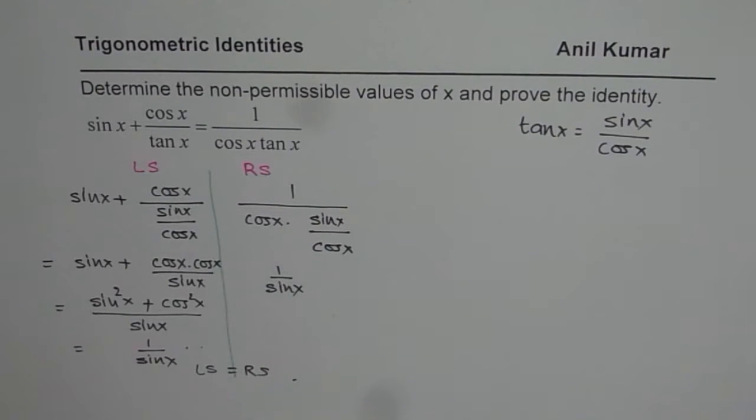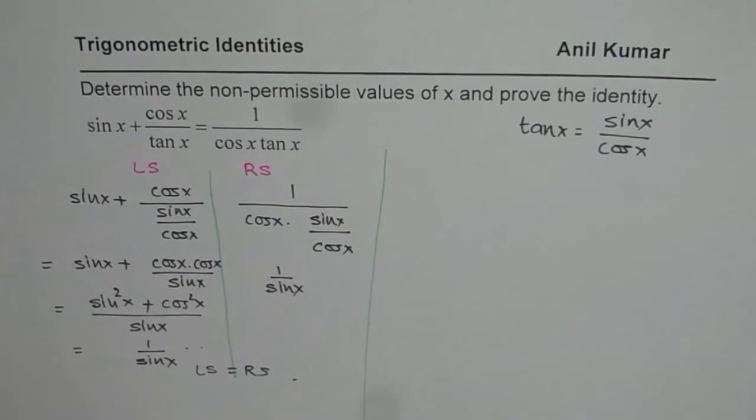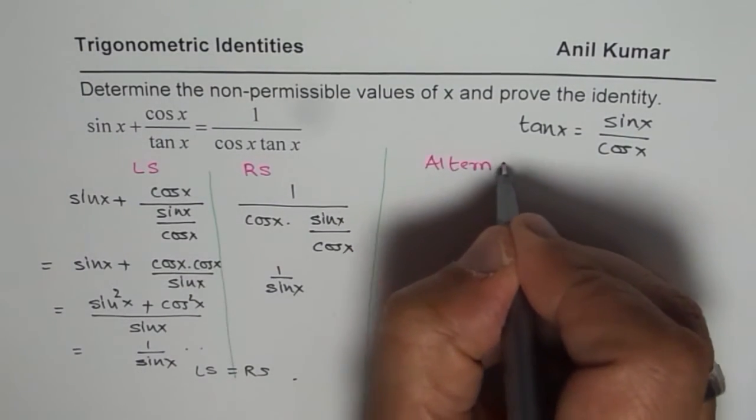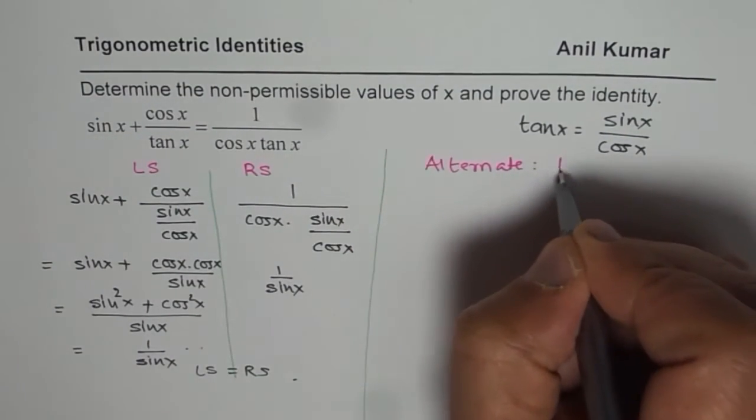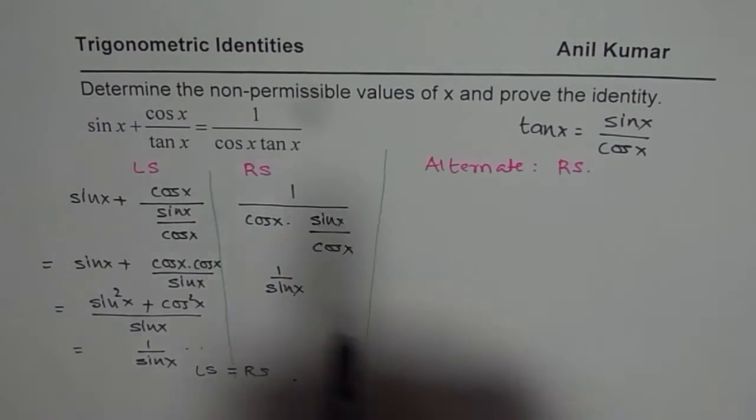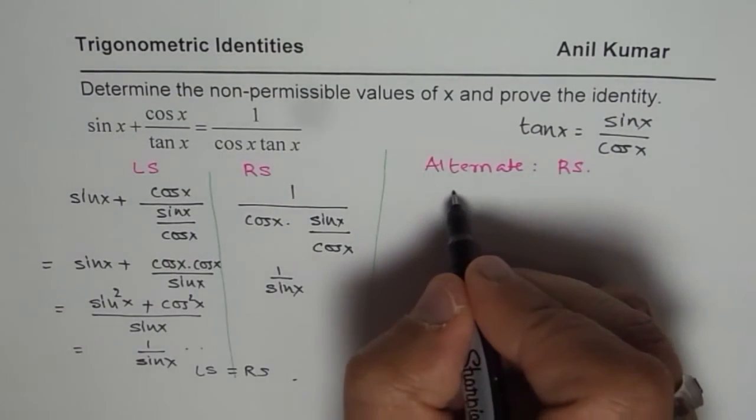Now, let me show you an alternate way of doing this also. We will begin with the right side in this particular case, and since we have sum of two things, let me show you how to do it.